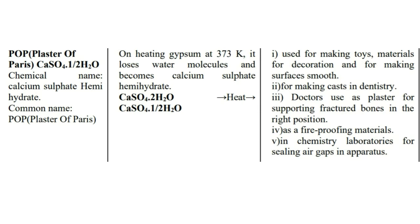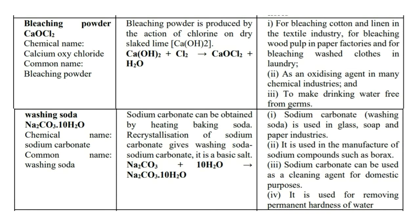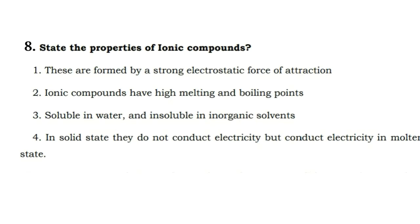Uses of plaster of Paris: it is used for making toys and decoration materials, for making surfaces smooth, by doctors as a plaster for supporting fractured bones, for making casts in dentistry, as a fireproofing material, and in chemistry laboratories for sealing air gaps in apparatus. Uses of bleaching powder: it is used for bleaching cotton and linen in the textile industry, as an oxidizing agent in chemical industries, and in purification of water to kill germs.